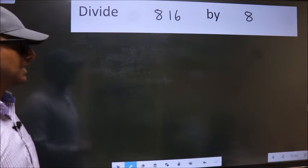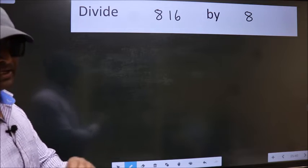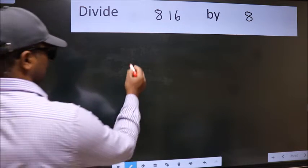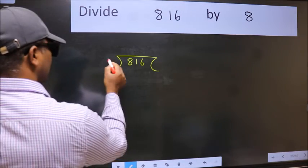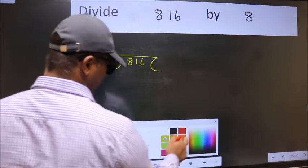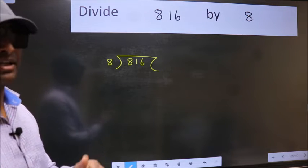Divide 816 by 8. To do this division, we should frame it in this way. 816 here, 8 here. This is your step 1. Next.